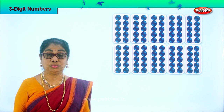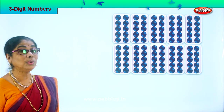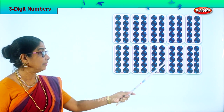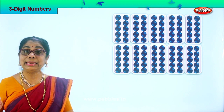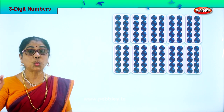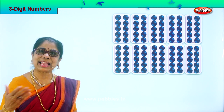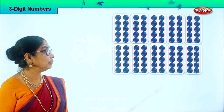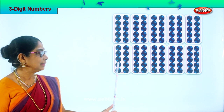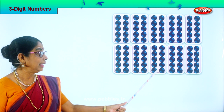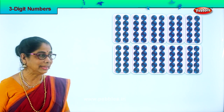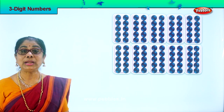We are learning to count. Look at the boxes — each box has one, two, three, four, five, six, seven, eight, nine, ten. There are ten boxes and each box has ten beads. Let's count in tens: ten, twenty, thirty, forty, fifty, sixty, seventy, eighty, ninety, and one hundred. There are ten boxes of ten each — so this is one hundred in all.